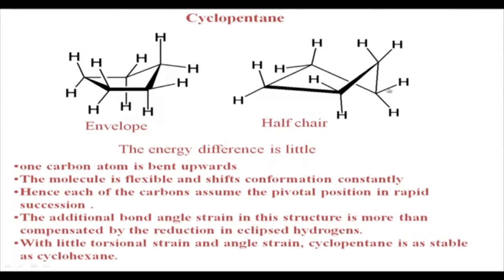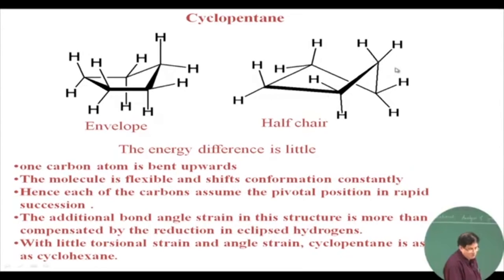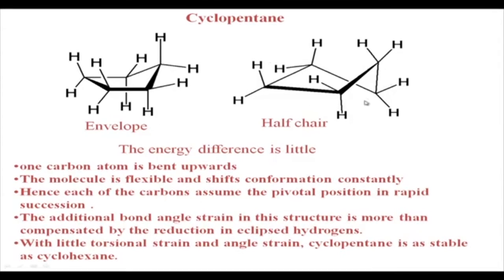The molecule always oscillates between envelope and half-chair, and which carbon is up is also not fixed — all carbons can be up one after another. Similarly, which two carbons are above and below is not fixed; it oscillates between adjacent carbon atoms. This phenomenon of conformational flexibility — the carbon going up and down — is called pseudo rotation. It occurs because torsional strain is reduced as the molecule adopts the puckered conformation.